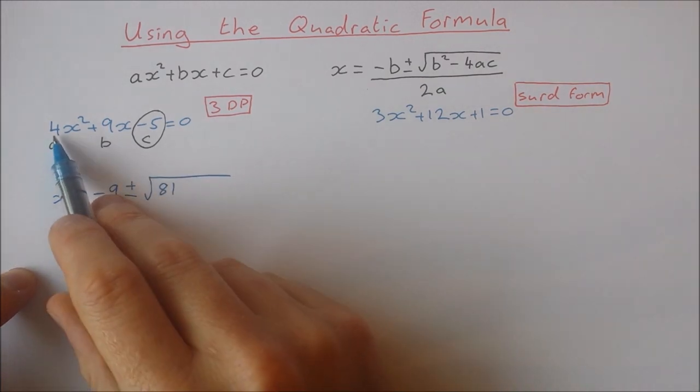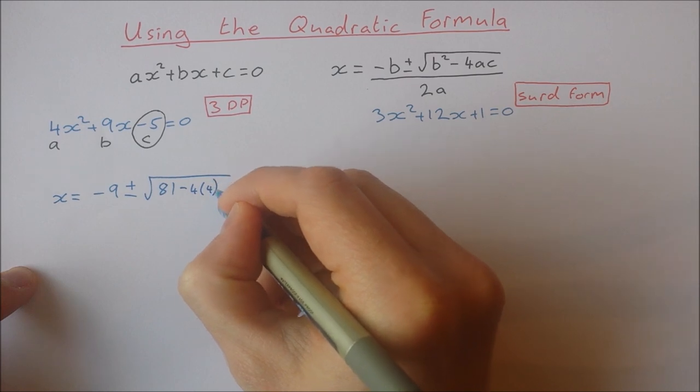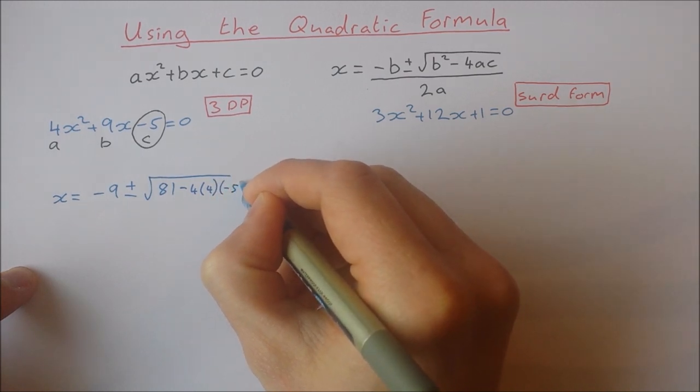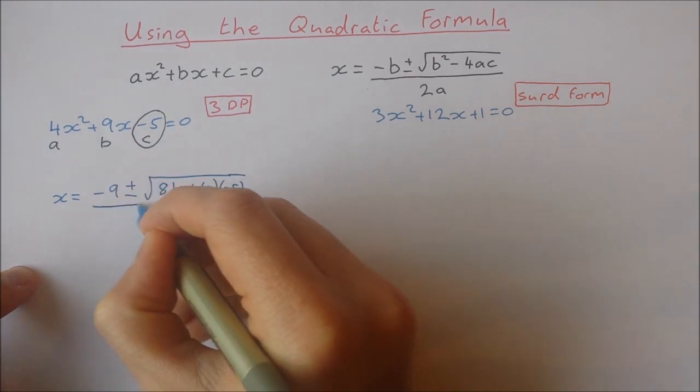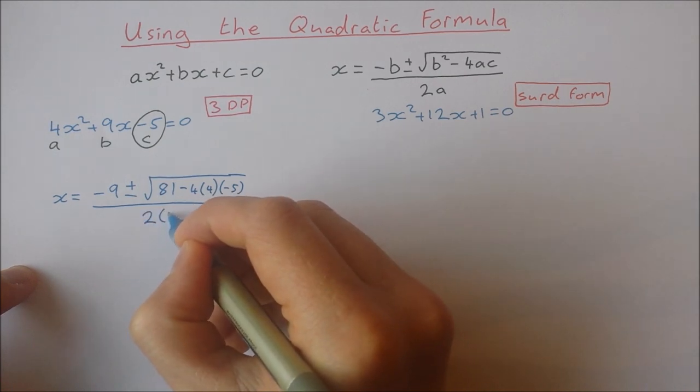So minus 4 times 4 times minus 5. And this is all over 2 times a, which is 2 times 4.